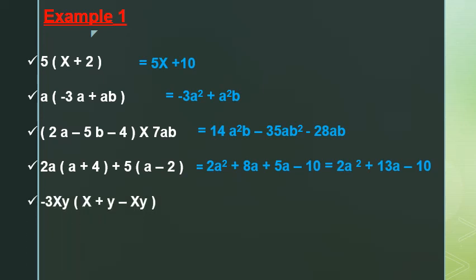Next: negative 3xy by (x + y minus xy). Distribute negative 3xy by x, by y, and by negative xy, giving negative 3x squared y, then negative 3xy squared, and positive 3x squared y squared. Thank you.